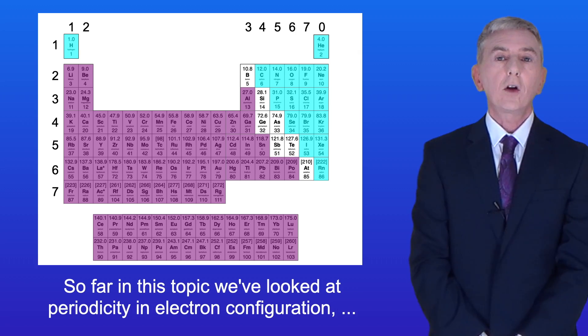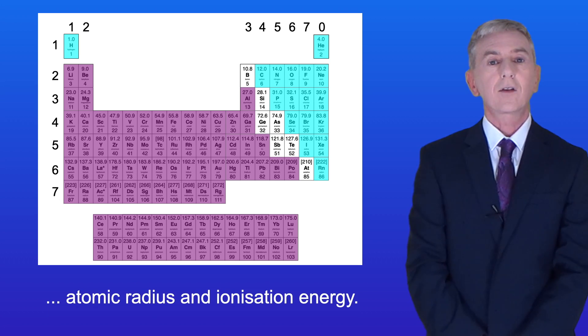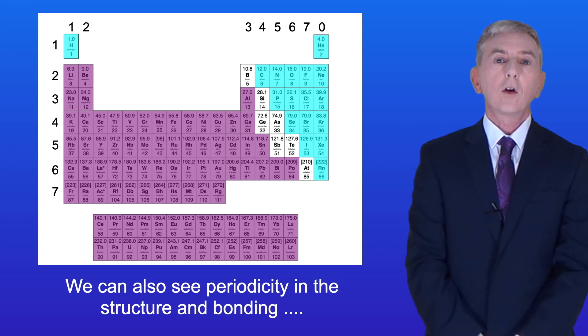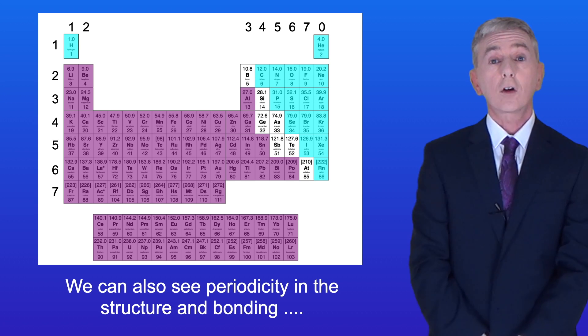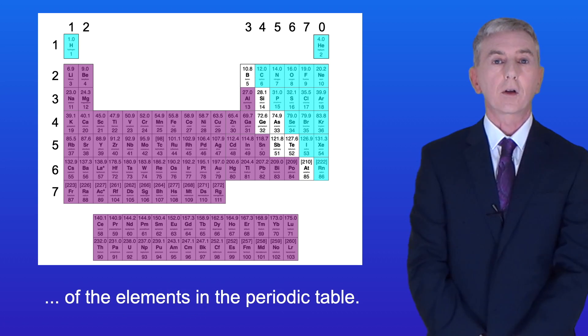So far on this topic we've looked at periodicity in electron configuration, atomic radius, and ionization energy. Now we can also see periodicity in the structure and bonding of the elements in the periodic table.